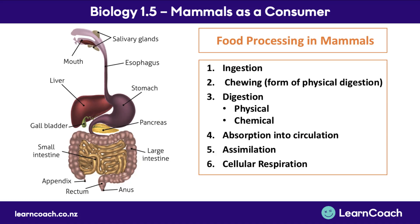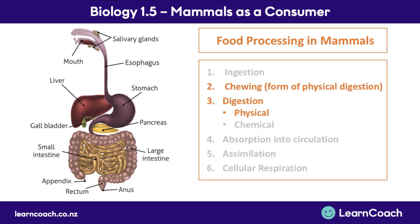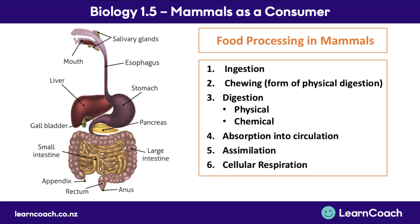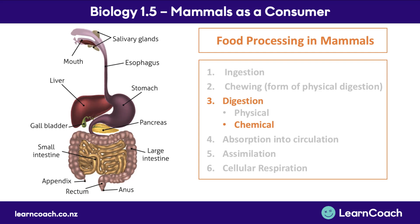Hello and welcome back to this video looking at biology 1.5 mammals as a consumer external. In the last video we covered physical digestion and chewing as two of the steps involved in food processing in mammals. In this video we're focusing on step three — we're going to be looking at chemical digestion and some specific places within the digestive system.